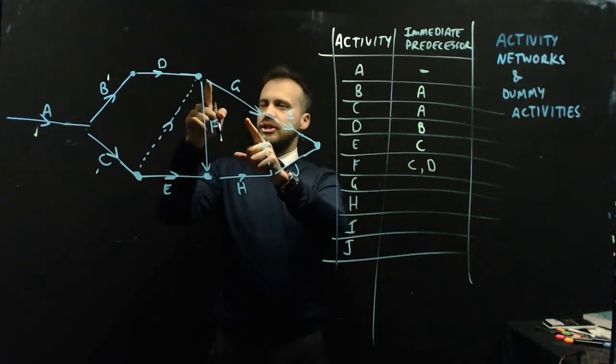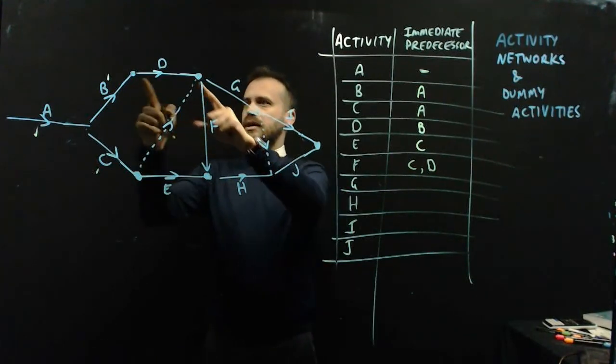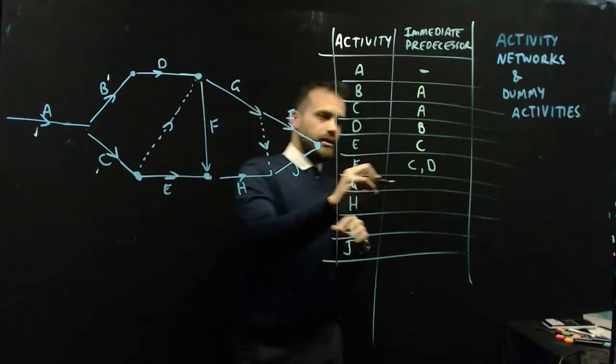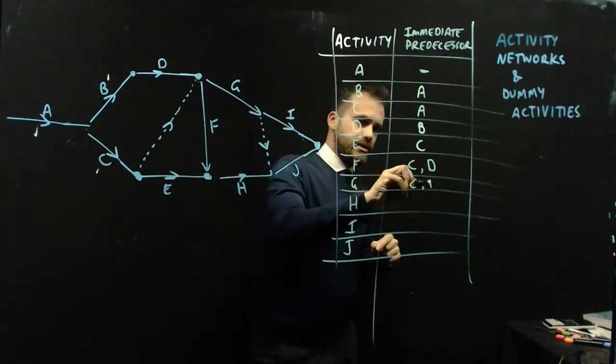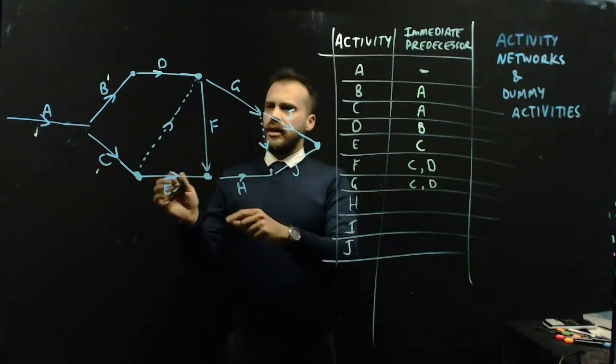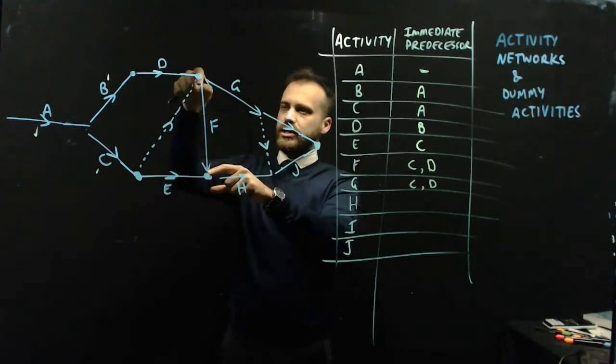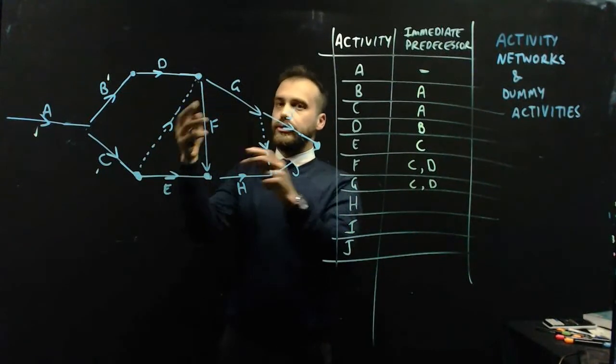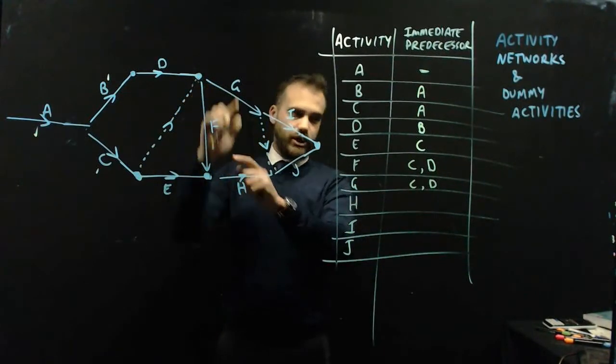What about G? Before G, we have to do D and this dummy activity which is C. C and D. Now, you might be looking at F. But F is not before G. F is like before or during or concurrent with G.